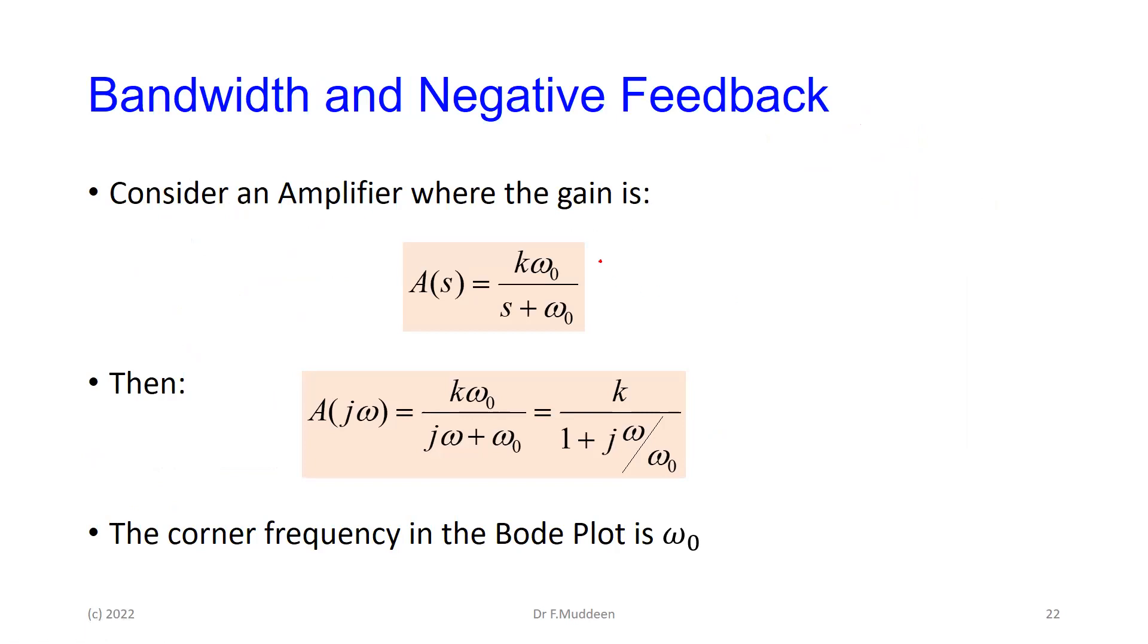So if the amplifier has a gain, and again we could describe by this transfer function, some k omega zero over s plus omega zero. If I give you this and I tell you, what is the frequency response? From what we've just done on Bode plots, we know that the first thing that we do is to replace s with j omega here, which gives us this. And then we express that transfer function now in standard form by dividing through by omega zero to make the coefficient here one. So the overall A of j omega is k over one plus j omega over omega zero.